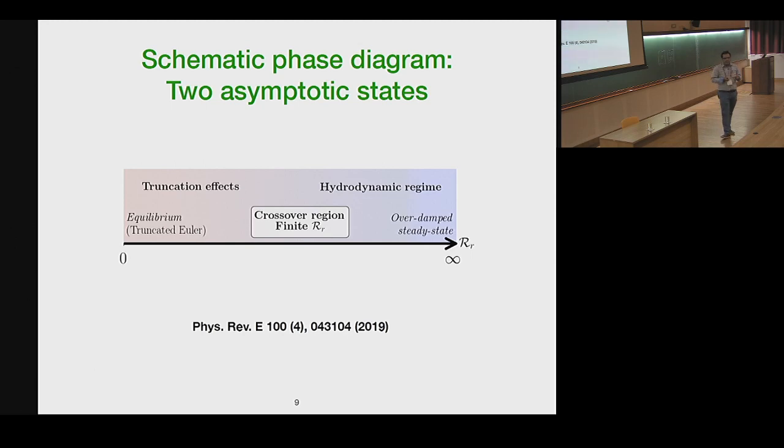If you evolve the system for long numerically, what happens? The system eventually thermalizes. And it has solutions which are called absolute equilibria, and you observe a statistical equipartition of energy between different Fourier modes.